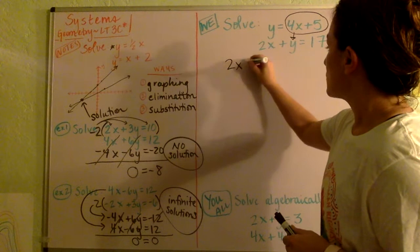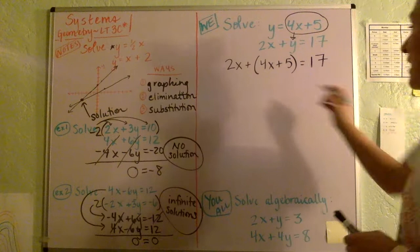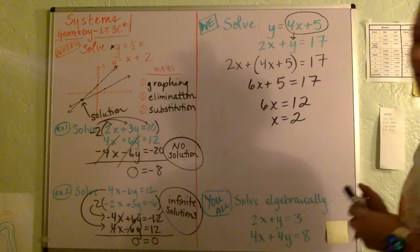So for example, we could go 2X plus, now replace the Y with what it's equal to in the other equation. And then now you have an equation with just X's in it. And so we have 2X and 4X up to 6X, right? And if we just go ahead and subtract the 5 and then divide by 6, we're going to get that X is 2.